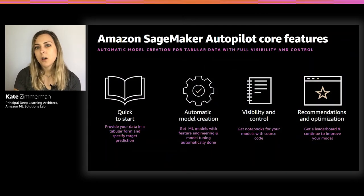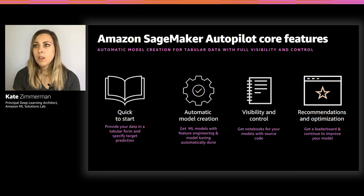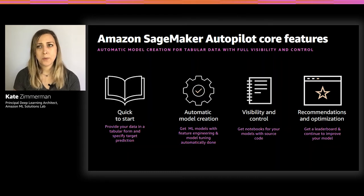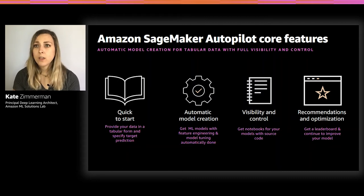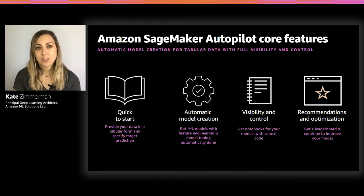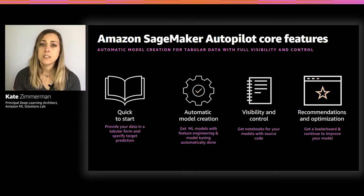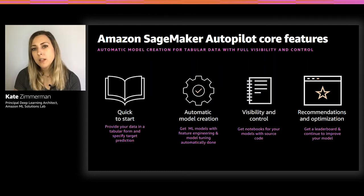Getting deeper into Autopilot core features: it supports input data in tabular format and does automatic data cleaning and pre-processing. It performs automatic algorithm selection for linear regression, binary classification, and multi-class classification. It also does automatic hyperparameter optimization and distributed training — allowing us to scale out in a big way. It also handles automatic instance and cluster size selection, looking at data set size, latencies, and algorithms to select optimal compute instance types on your behalf.